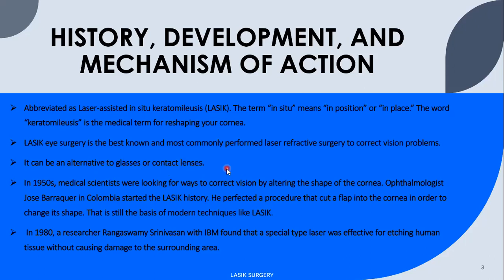According to the history of it, in 1950, medical scientists were looking for ways to correct vision by changing the shape of the cornea. Ophthalmologist Jose Barraquer in Colombia started laser surgery. He developed a procedure that creates a flap into the cornea in order to change the shape. That is still the basis of modern techniques like LASIK. In 1980, a researcher working with IBM found that a special type of laser was effective for cutting human tissue without causing damage to the surrounding area.